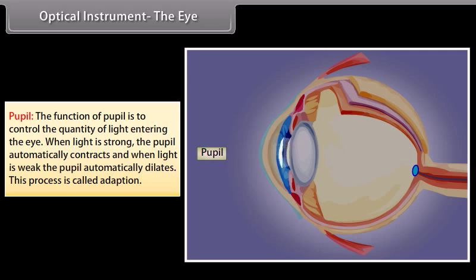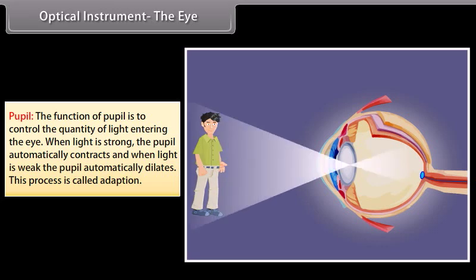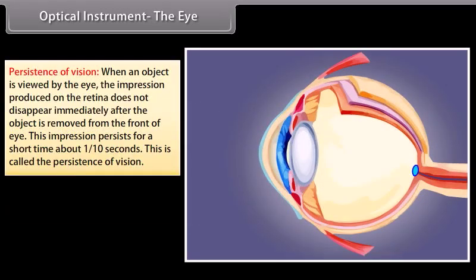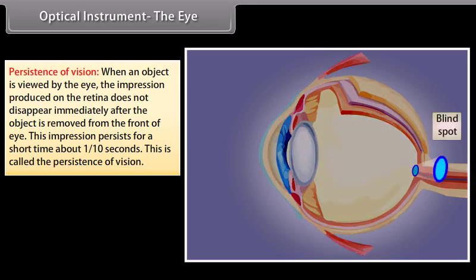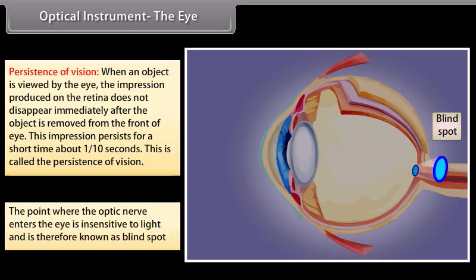The pupil controls the quantity of light entering the eye. When light is strong, the pupil automatically contracts; when light is weak, it dilates. This process is called adaptation. Persistence of vision: the impression produced on the retina does not disappear immediately after the object is removed; it persists for about 1/10 of a second. The point where the optic nerve enters the eye is insensitive to light and is called the blind spot.